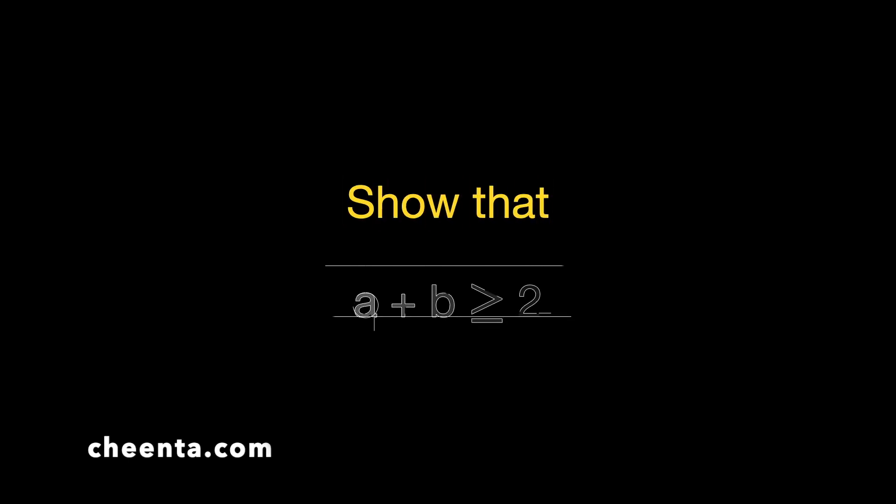The given data is this: that we have two numbers, A and B, which are greater than 0. And it's also given that their product is equal to 1. This is the given information. They are both greater than 0, and their product is equal to 1. We want to show that their sum exceeds 2, or rather greater than or equal to 2.